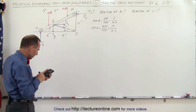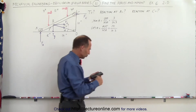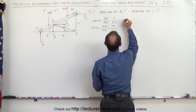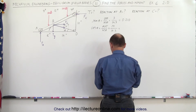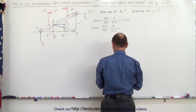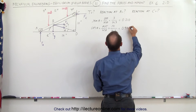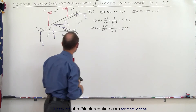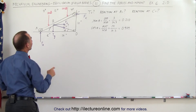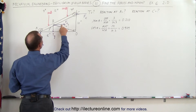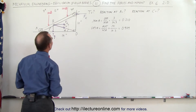Calculating those out: 3 divided by 14.3 equals 0.210 for sine of theta, and 14 divided by 14.3 equals 0.979 for cosine of theta. So how do we find all those forces? We have unknowns T sub Y, T sub X, F sub C, and F sub A, and two known forces of 100 pounds each.